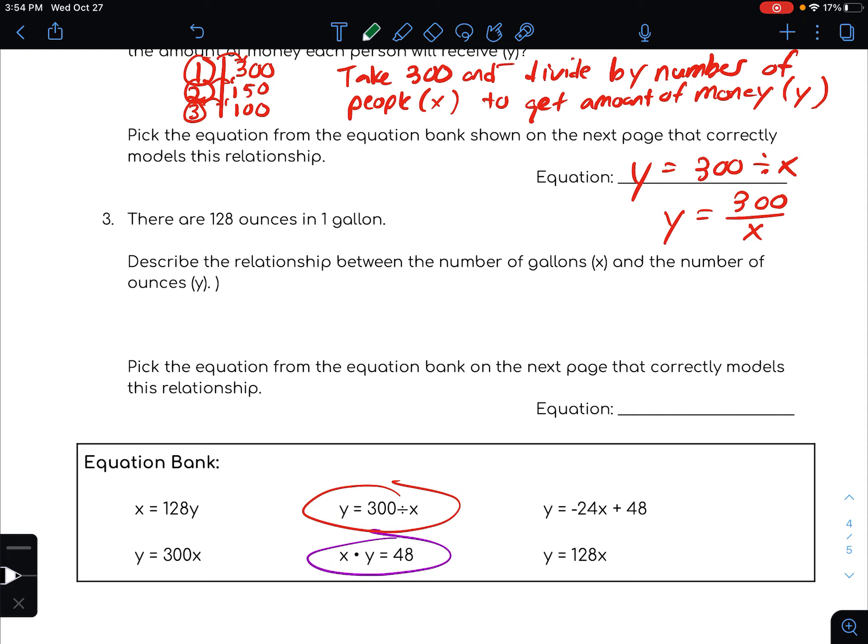All right, so I'm just going to maybe make a table of values on this one as well. So I've got x and y, x is gallons and y is ounces. So if I've got one gallon, that's 128 ounces. If I've got two gallons, then that would be double that, so that would be like 256 ounces.